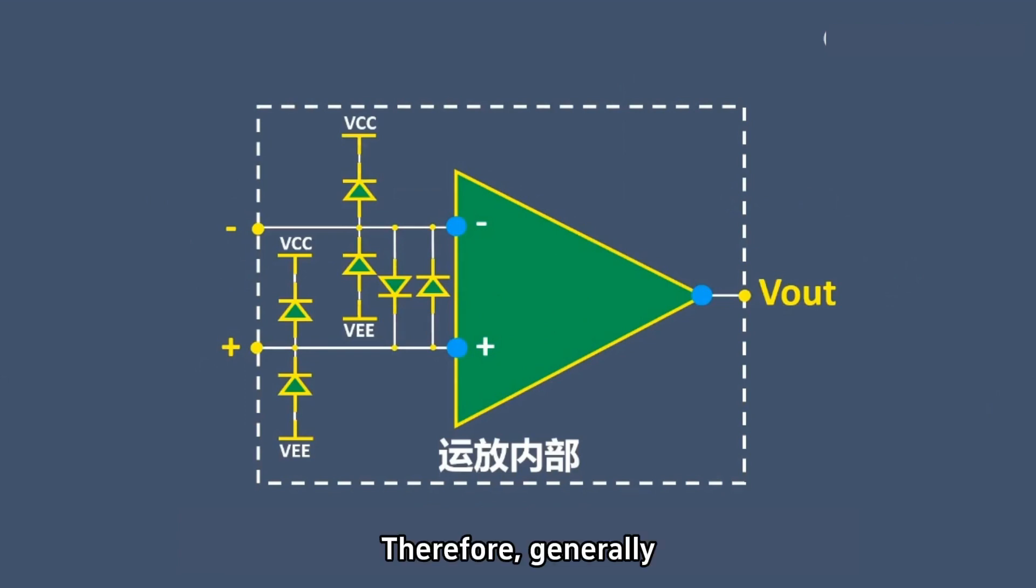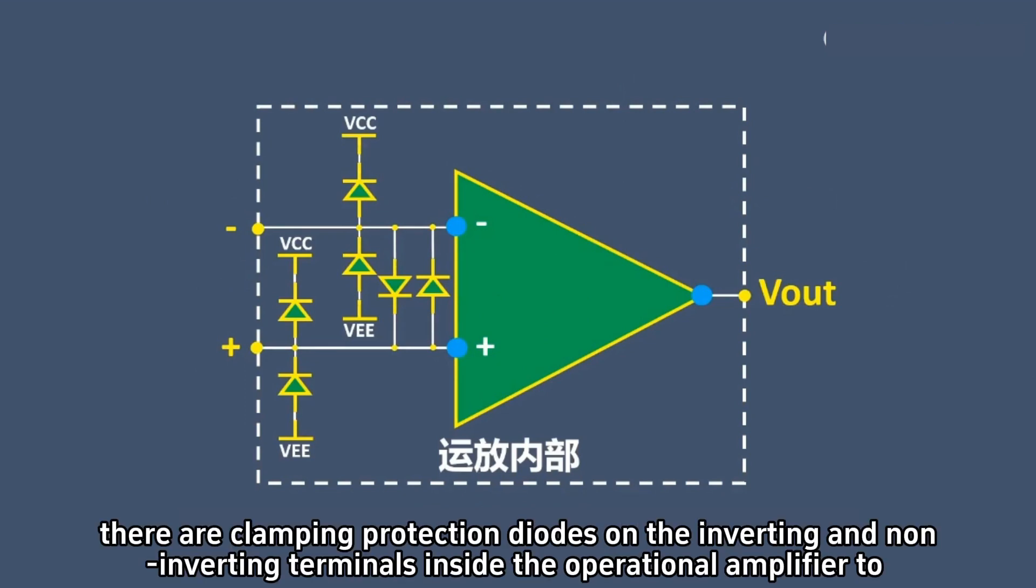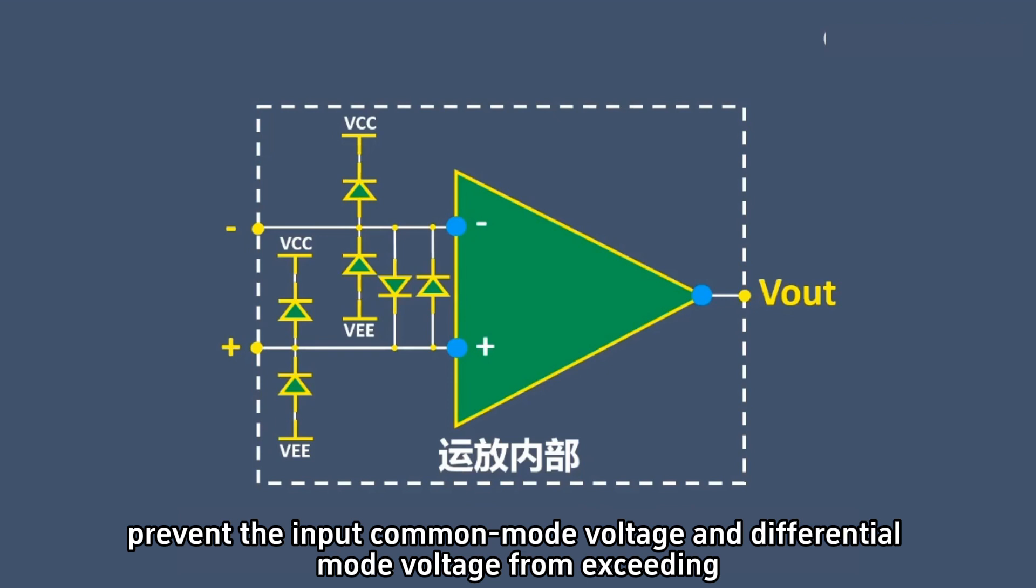Therefore, generally, there are clamping protection diodes on the inverting and non-inverting terminals inside the operational amplifier to prevent the input common-mode voltage and differential-mode voltage from exceeding a certain voltage value.